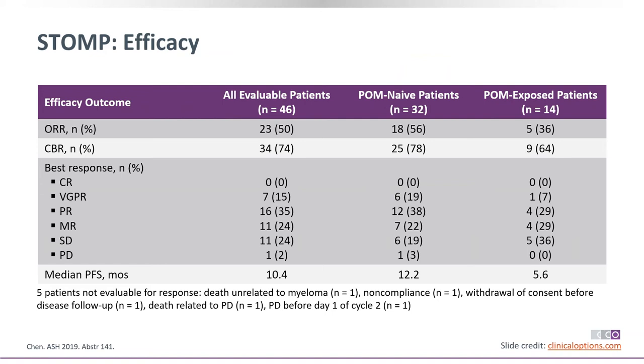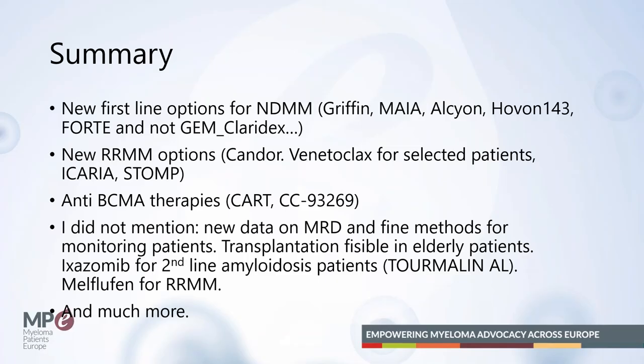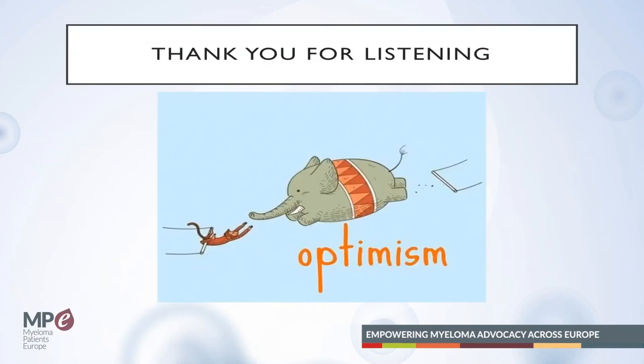In summary: we talked today about new first-line options mostly with daratumumab and carfilzomib, the potential of venetoclax, anti-BCMA therapy — CAR-T cells are very impressive and promising — and new antibodies coming in the next two years. I didn't have time to mention new MRD monitoring methods, transplantation feasibility in elderly patients, ixazomib for second-line amyloidosis, or melflufen — a more effective melphalan derivative for advanced patients. Time is up. I hope you leave with much more optimism — thank you very much for listening.